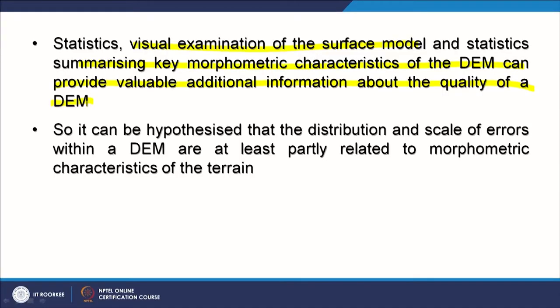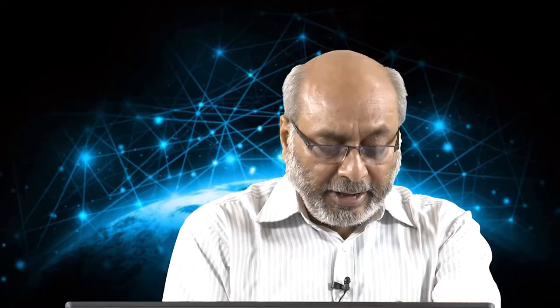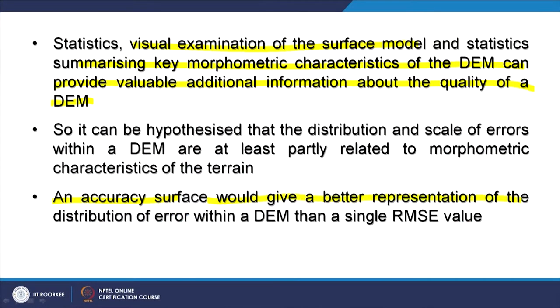We can hypothesize that the distribution and scale of errors within a DEM are at least partly related to the morphometric characteristics of the terrain. When you have a DEM of highly rugged terrain, the scenario can be very different. Applying morphometric analysis may reveal errors inherent in that DEM. An accuracy surface would give a better representation of the distribution of errors than a single RMSE value, since errors are spatially varying — we need a surface showing where errors are more and where they are less.